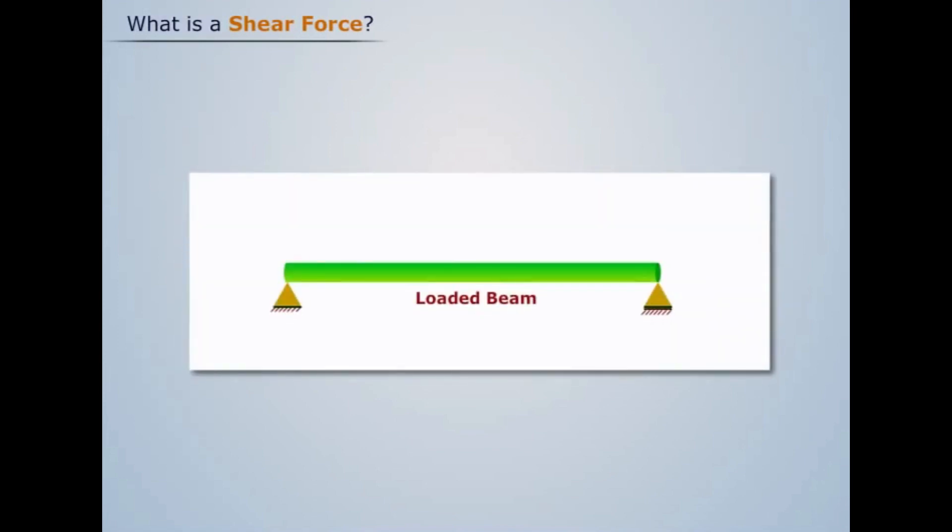Consider a loaded beam with the loads W1, W2, and W3. The reactions are R1 at one end and R2 at the other end. As you can see, these three loads and both the reactions are vertical forces.